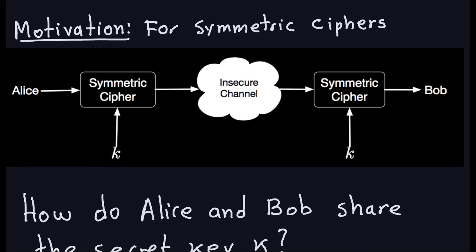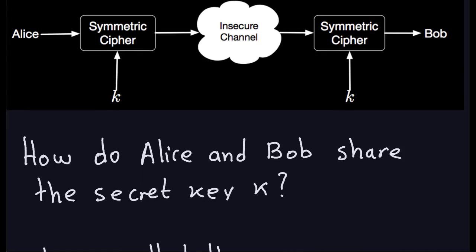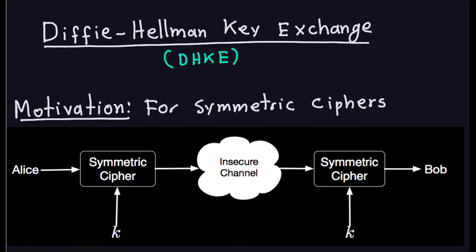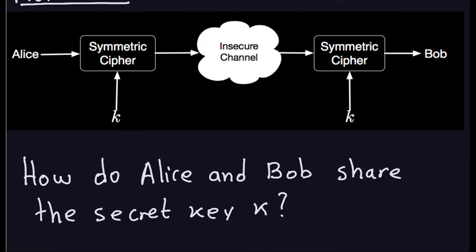You cannot assume either that the two parties can meet to share the key somewhere — that's also not a possibility. For example, if you have your bank and you want to use a symmetric cipher, which is usually what happens with online encryption, you can't just go to the bank and agree on a symmetric key. So this all has to happen through the insecure channel. The problem we have here — how do we agree on a key — is called the key distribution problem, which is important if we want to use symmetric ciphers. The Diffie-Hellman key exchange solves this problem: how to share a key through an insecure channel.